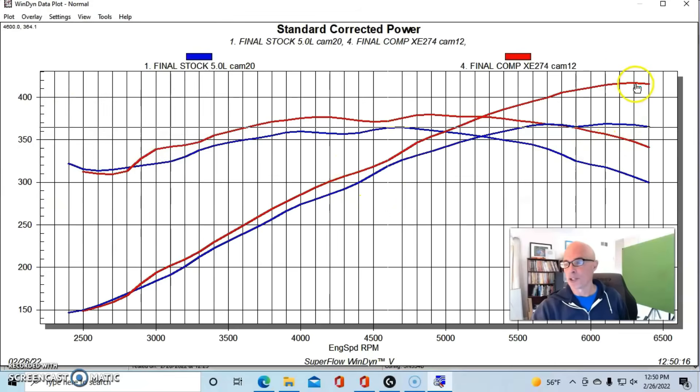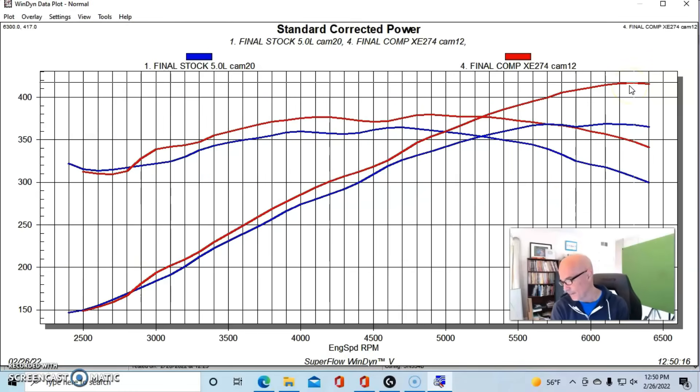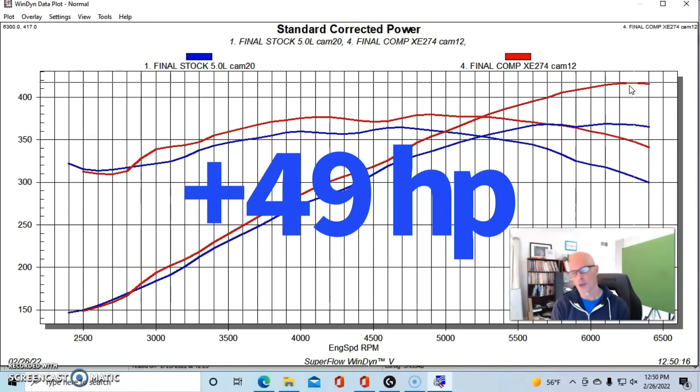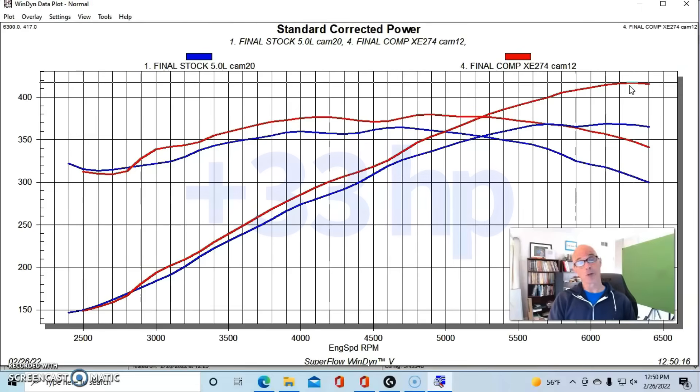You can see the peak power jumped up to 417 horsepower, which from peak to peak gave us a gain of 49 horsepower. So you remember from the previous example on the milder combination, the camshaft was worth 33 horsepower. Now it's worth 49 horsepower. So how much is a cam upgrade really worth? As we're showing here, it depends greatly on whatever you're testing it on.